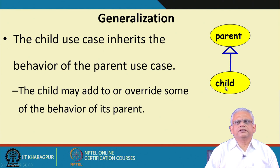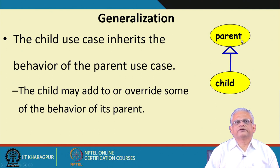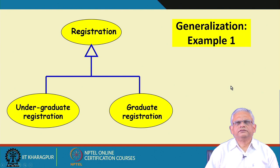The extra behavior that is needed is represented in the child use case. We have effectively split a complex use case into two parts: the parent contains the basic functionality, and the child adds the extra functionality while inheriting the parent's behavior. Of course, some of the functionality in the parent may be overridden by the child use case.